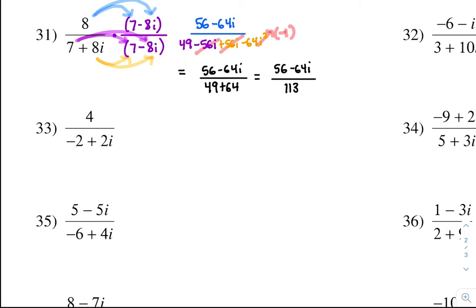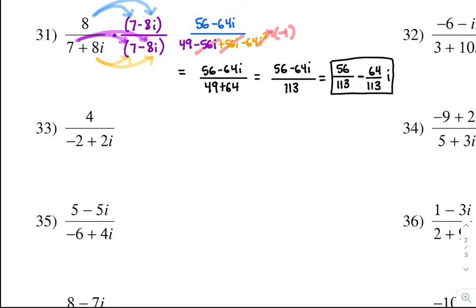So we have 56 minus 64i all over 113. Lastly, get this into standard form by splitting up the fraction: 56 over 113 minus 64 over 113i. That is the answer for problem 31.